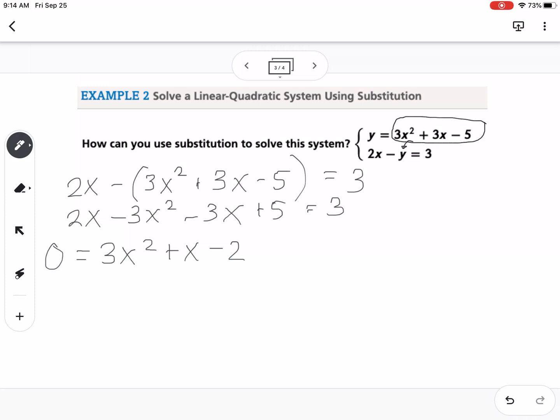So then we have a quadratic, we can try to factor this, so we can say what two numbers multiply to negative 6 and add to 1, so that would be negative 2 and 3. So I can write this as 3x squared minus 2x plus 3x minus 2. I can group my first two terms, I can factor out an x, and I can factor out a 1.